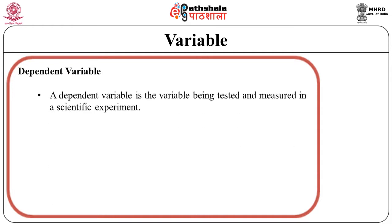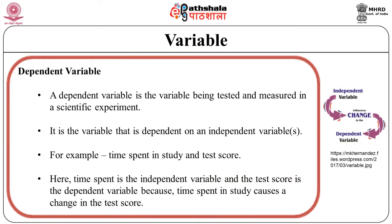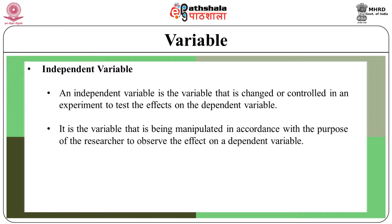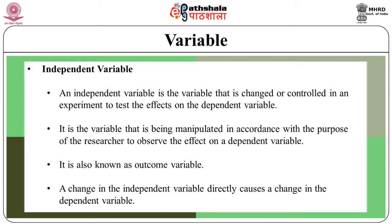Another variable is the dependent variable. A dependent variable is the variable being tested and measured in a scientific experiment — it is dependent on an independent variable. For example, time spent in study and test score: the time spent is the independent variable and the test score is the dependent variable, because time spent in study causes a change in the test score. The independent variable is a variable that is changed or controlled in an experiment to test the effect on the dependent variable — it is the variable being manipulated in accordance with the purpose of the researcher to observe the effect on the dependent variable. A change in the independent variable directly causes a change in the dependent variable.